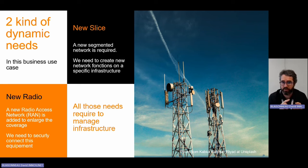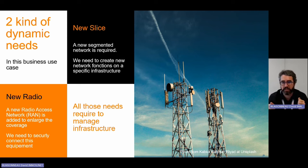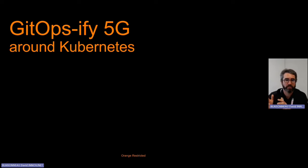So we have to create a new network, create a new infrastructure, and deploy an application inside this network infrastructure. We also have to deal with new radios when a customer wants to enlarge their 5G coverage. They plug new radio in their site, so we have to securely connect this equipment to the 5G core network. We have to GitOps-ify not only Kubernetes, but also all the infrastructure around our 5G core.